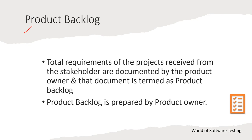Based on client requirements or priority, the product owner prioritizes the requirements in the product backlog. The total requirements of the project received from the stakeholder are documented by the product owner, and that document is termed the product backlog document. It contains all product requirements and is prepared by the product owner.